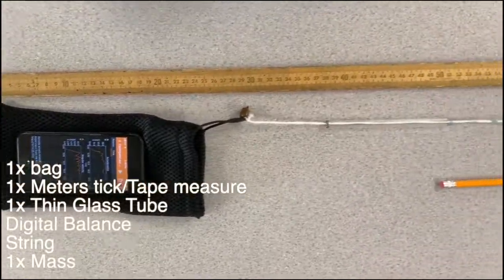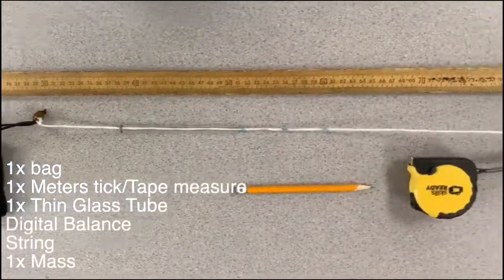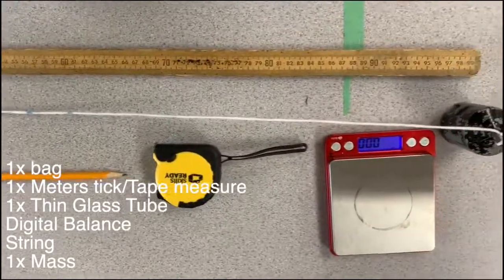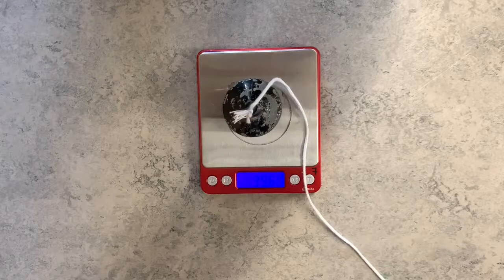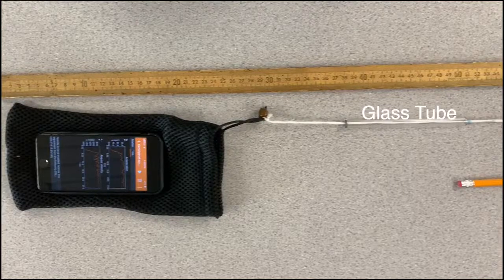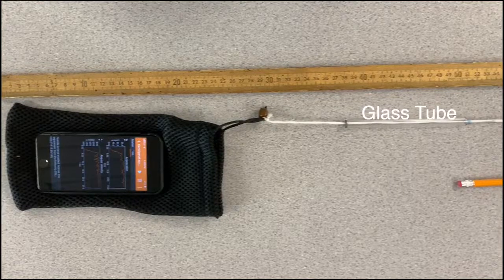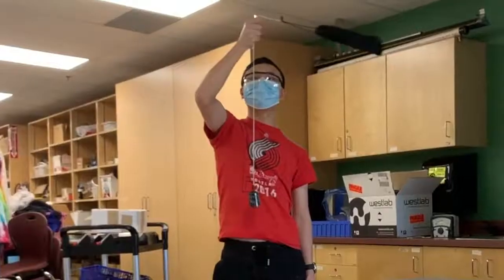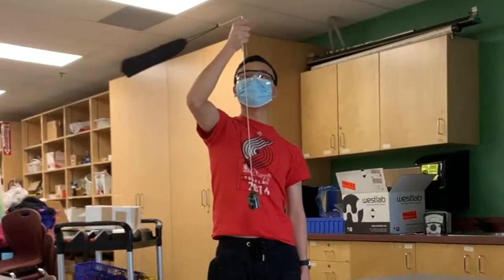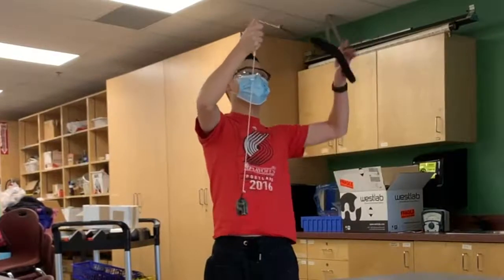These are the things you will need for this experiment. Attach a mass to the bottom of the string, put the string through the glass tube, put your phone in a bag and attach the bag to the other end of the string. Test your apparatus by spinning something of similar mass to your phone first to make sure it's safe.